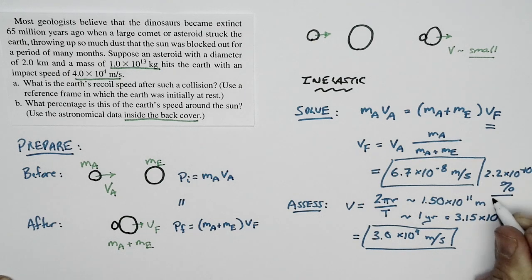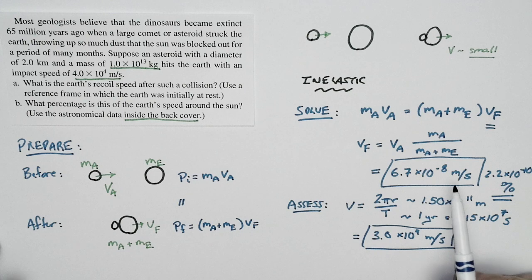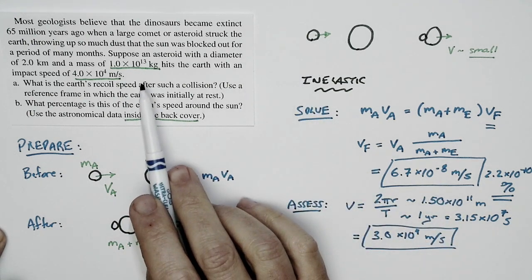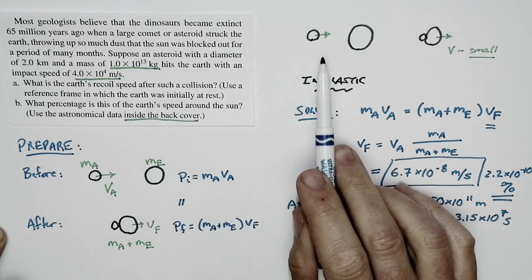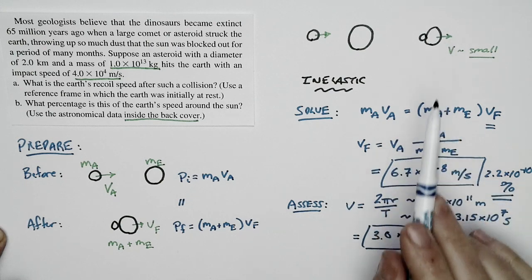That is quite a small percentage indeed. And so we see this speed is a tiny percentage of the Earth's speed around the sun. The recoil speed is very small. And this makes sense because the asteroid is big. I mean, it's 10 to the 13th kilograms, but not big compared to the mass of the Earth. And so we expect a final recoil speed that's quite small.